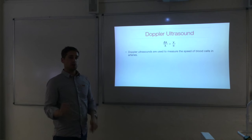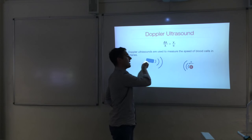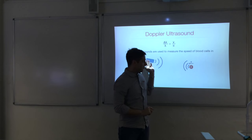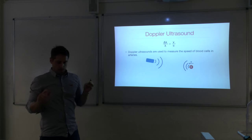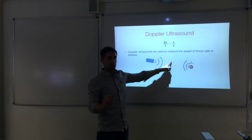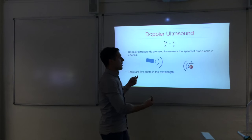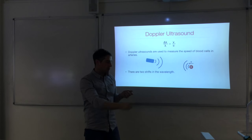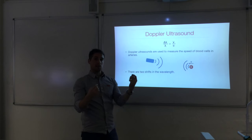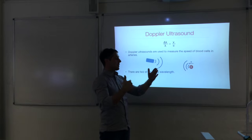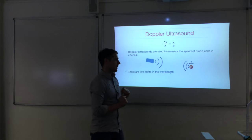Doppler ultrasound measures the speed of blood cells in arteries. The transducer transmits ultrasound aligned toward the moving blood cells. When the blood cells reflect the ultrasound back, you get a shifted wavelength. There are actually two shifts: first, when the ultrasound is produced by the transducer, the blood cell acts as an observer moving toward the source, so the received wavelength is reduced. Second, when it reflects, the blood cell acts as a moving source, shortening the wavelength again.